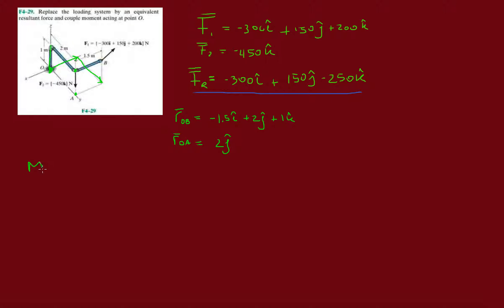Now we just need to take the moment. Let's take M1. M1 will be ROB cross F1. I'm going to do this with a determinant, so it's i, j, k, and then the distance negative 1.5, 2, 1, and then the force F1 is minus 300, 150, and 200.